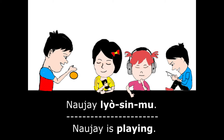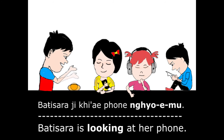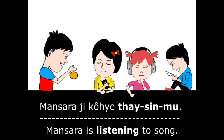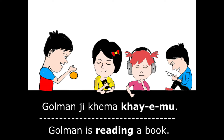Naoje Leosin Mu. Batisara Ji Khe Phon Ngoy Mu — at her phone. Mansara Ji Kwe Thesin Mu — Mansara Ji listening to a song. Goleman Ji Khe Ma Khe Mu — Goleman Ji reading a book.